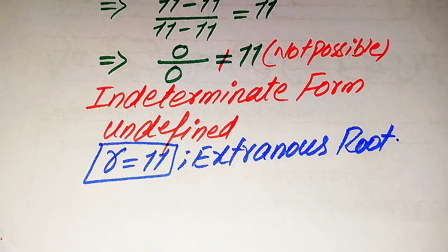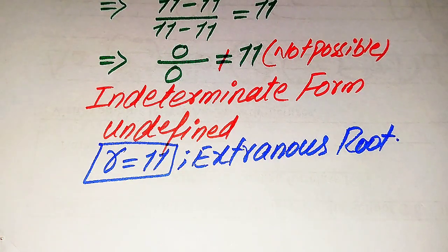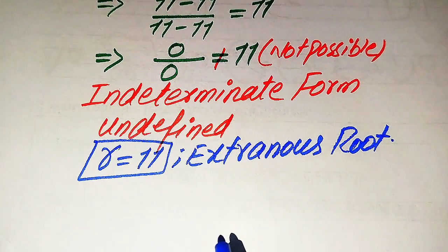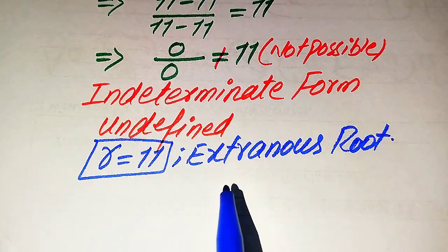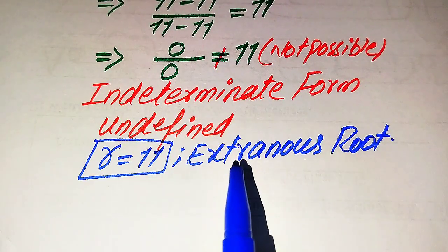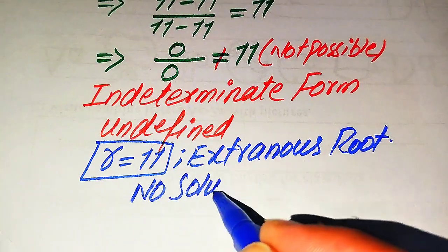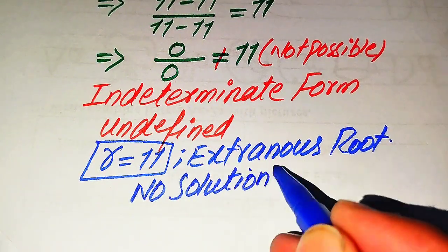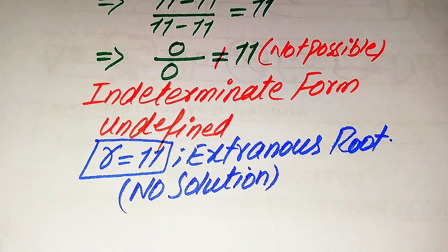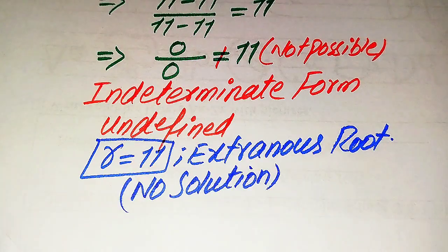The roots which do not satisfy the given equation are called extraneous roots. Since r equals 11 is the only root we found and it is extraneous, this question has no solution because we cannot get any other value of r that satisfies the given equation. This is the final conclusion about the first method.